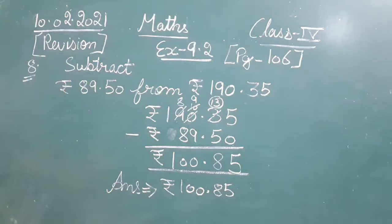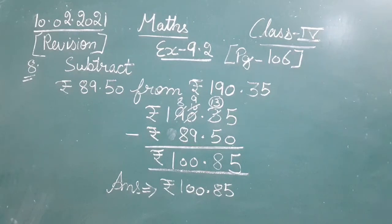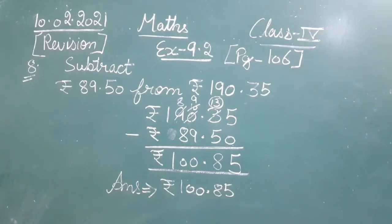The answer is rupees 100 and 85 paise. This is the solution of subtraction sum number 8.